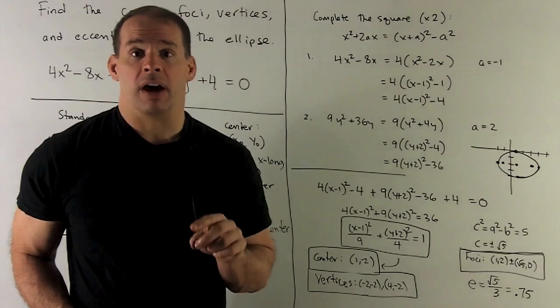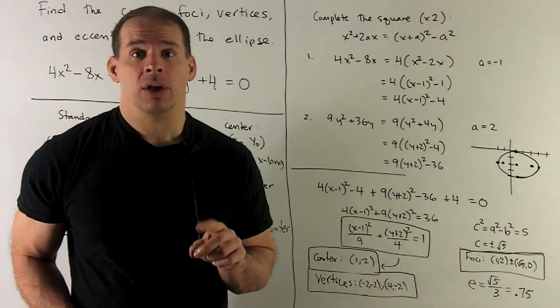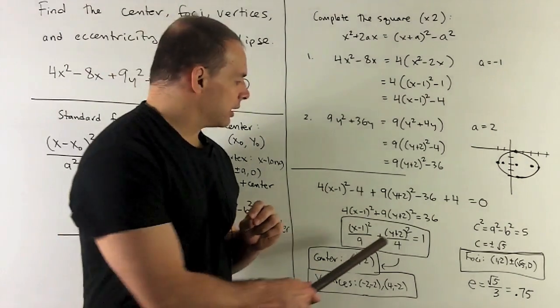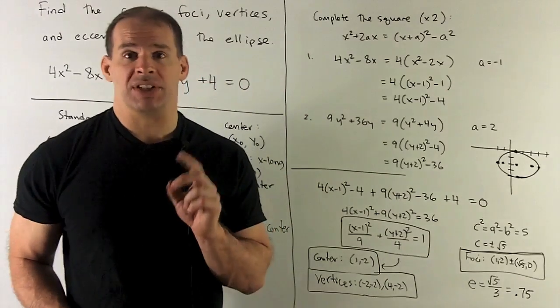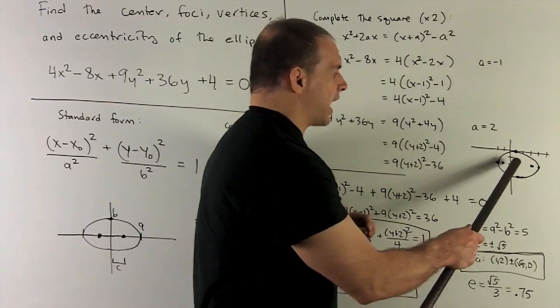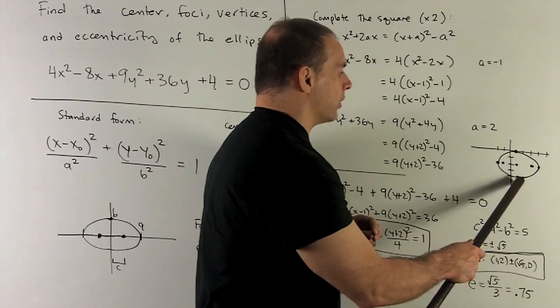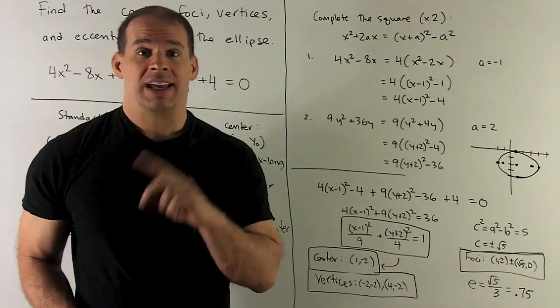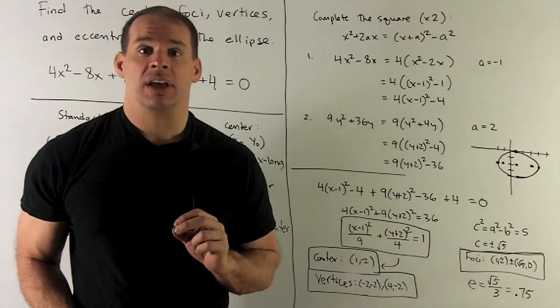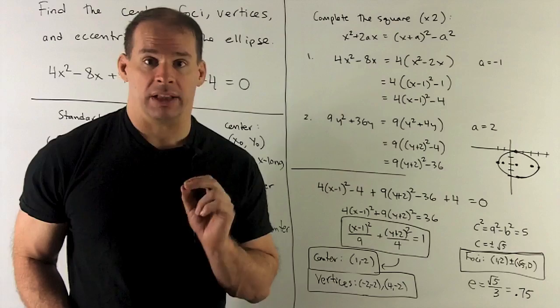To get the points off of our center in the y direction, we use the b². b² = 4. So, b = 2. I go from the center up 2 and then down 2. Now, we can just connect the dots. And that gives us a general idea of our graph for the ellipse.